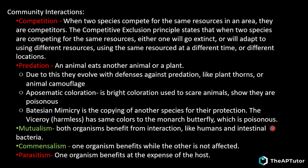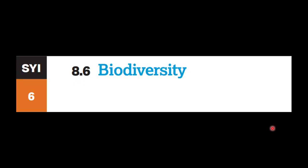Mutualism is when both organisms benefit, like humans and intestinal bacteria. Commensalism is when one organism benefits while the other is unaffected. Parasitism is when one organism benefits at the expense of the host. In summary: mutualism and commensalism are positive or neutral interactions; parasitism and predation involve one organism being negatively affected; competition is negative for both species involved.